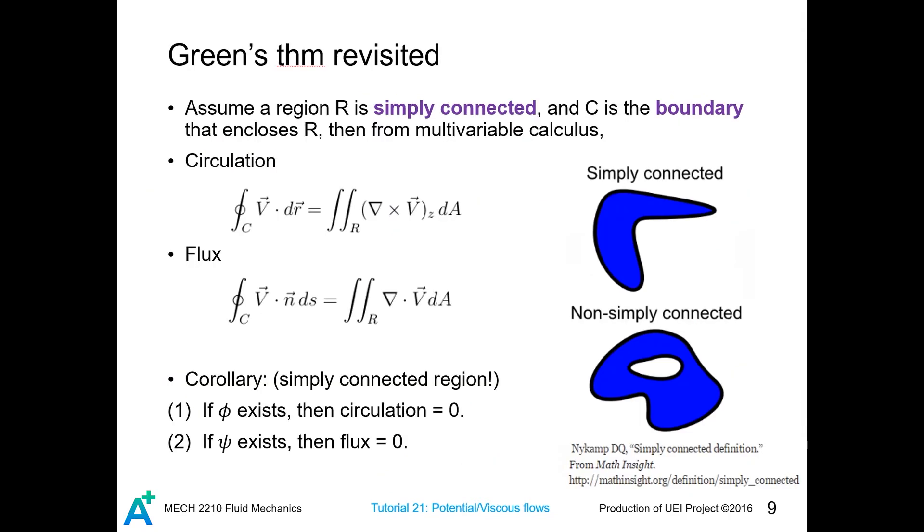In multivariable calculus, we have learned about Green's theorem. It is also useful in finding line integrals, but it cannot be used to find all line integrals. It is because first, the curve might not be closed. Second, even if the curve is simply closed, the region bounded by the curve may not be simply connected. Like this, there is a hole here, so it is not simply connected. But this fact is remarkable. For irrotational flow, that is, the velocity potential exists, then the circulation is zero, given that the region enclosed by C is simply connected. It is because this goes away and integral of zero is always zero. We can also say that the flux is zero if the flow is incompressible.